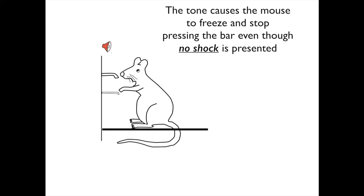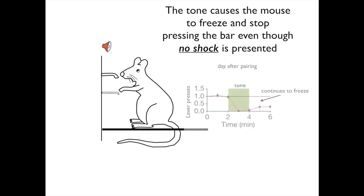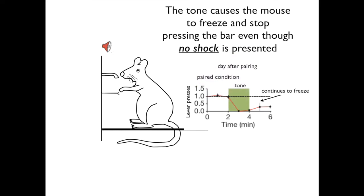The data obtained the following day is plotted as a graph. Time in minutes is plotted on the x-axis. The number of bar presses is plotted on the y-axis, and the time when the tone comes on is shown in green. This summarizes the results obtained for the paired condition.